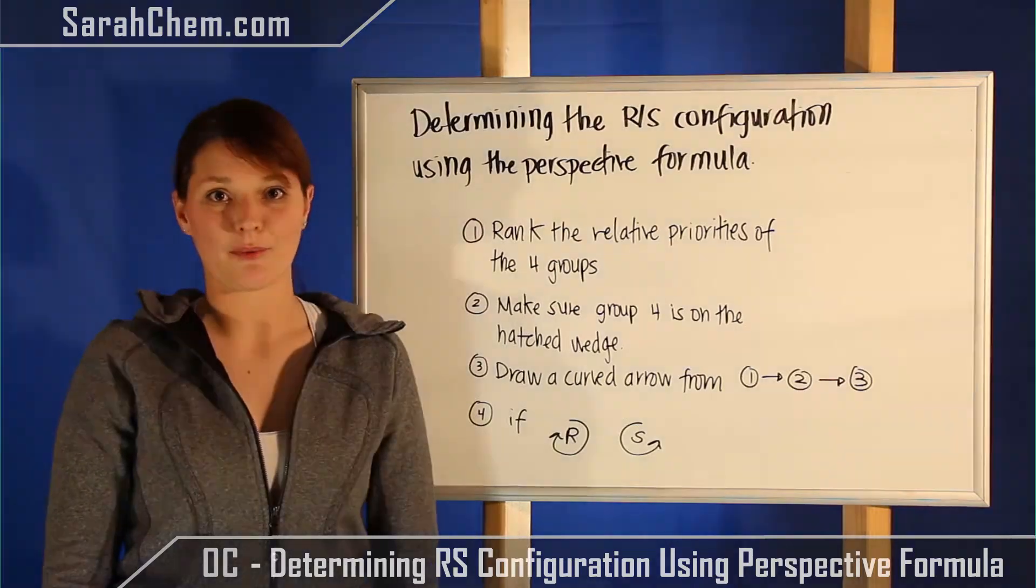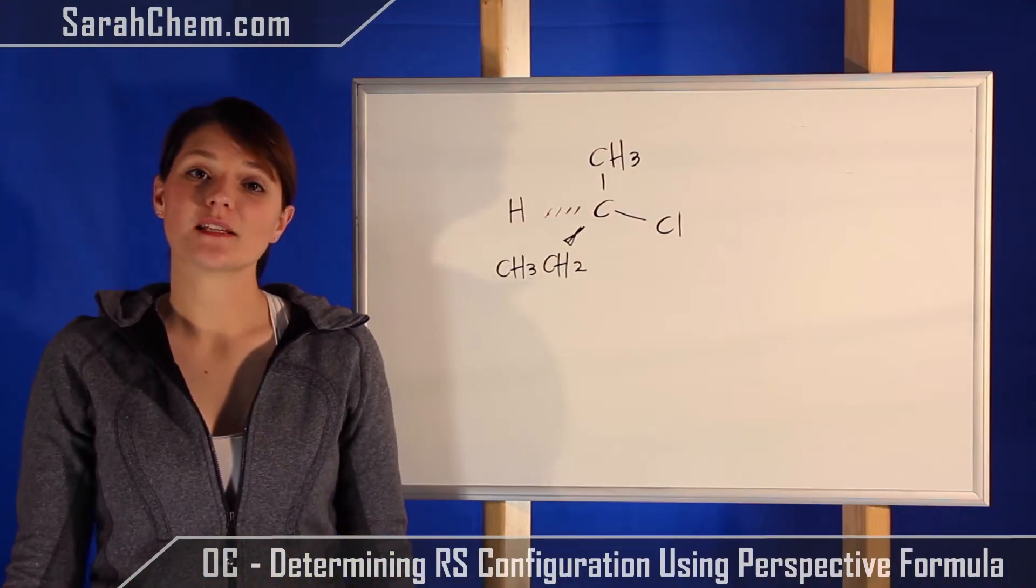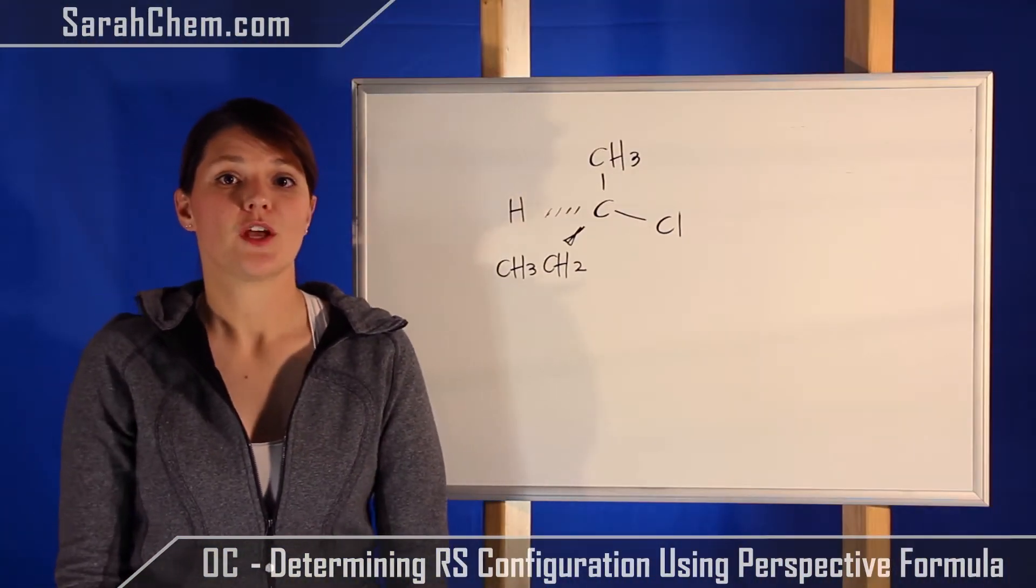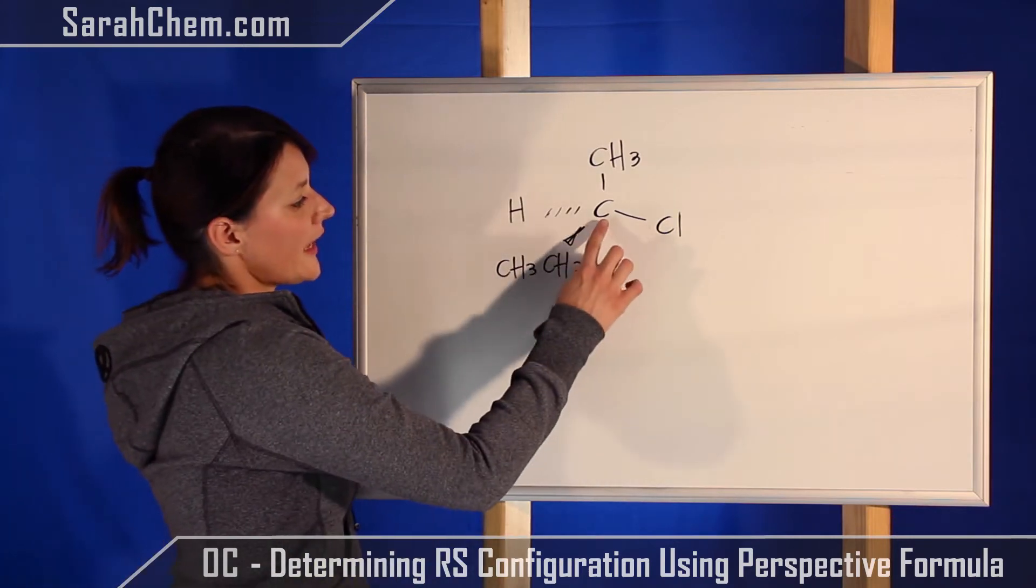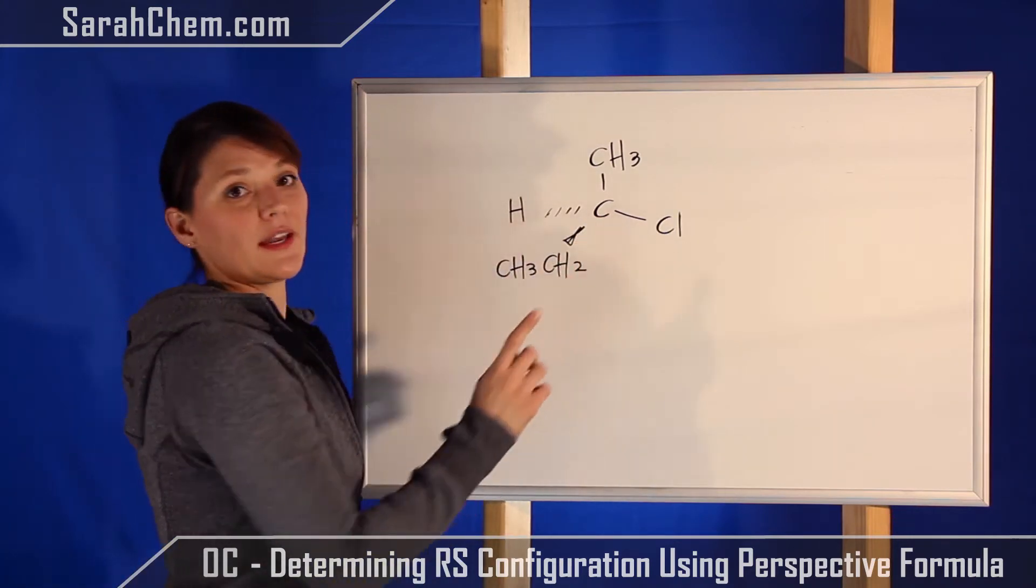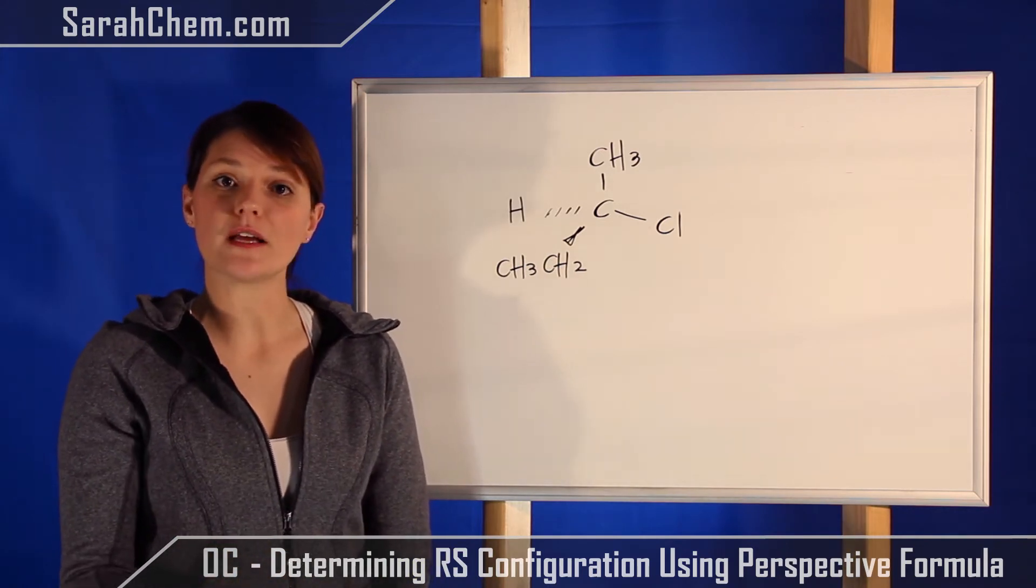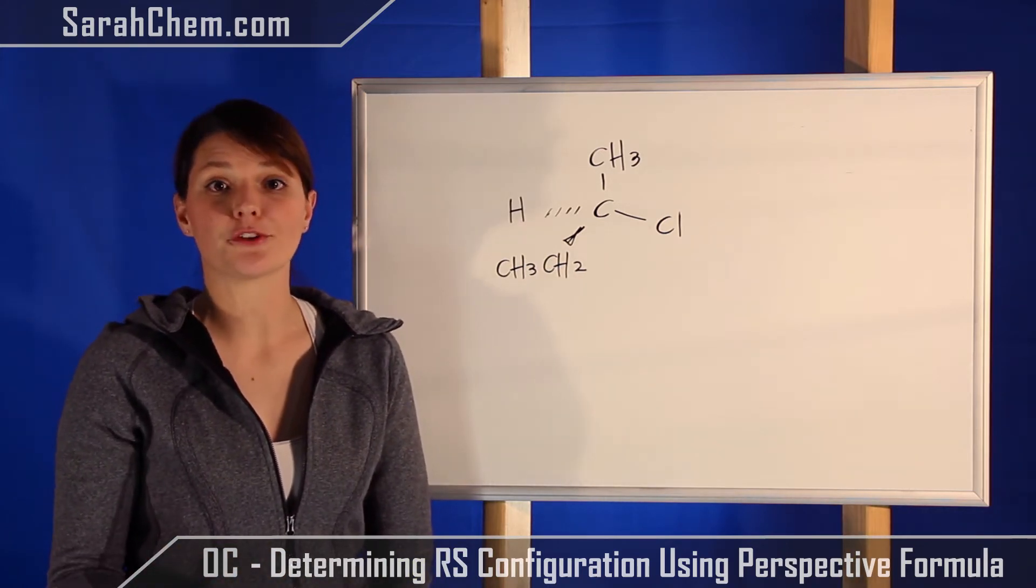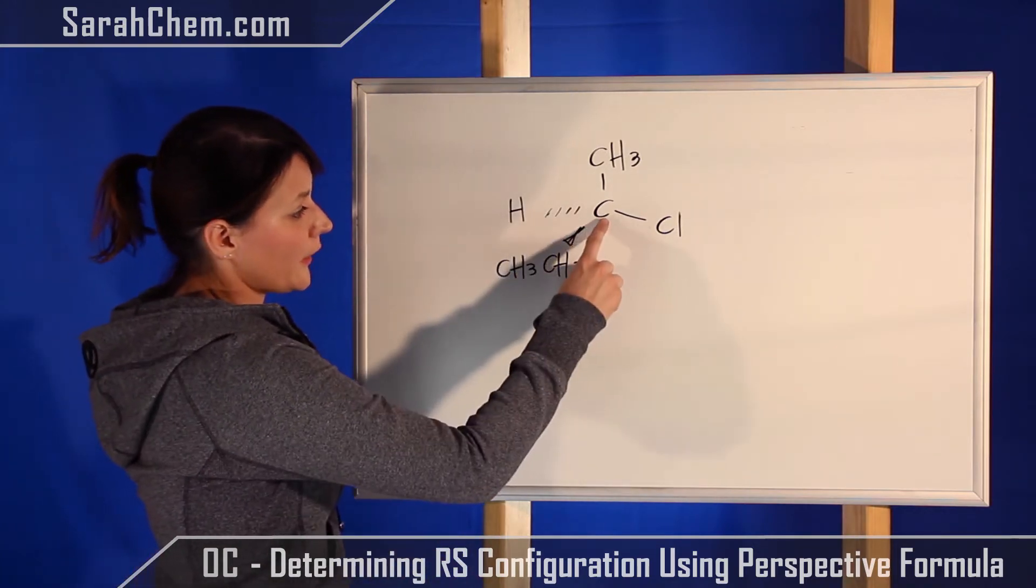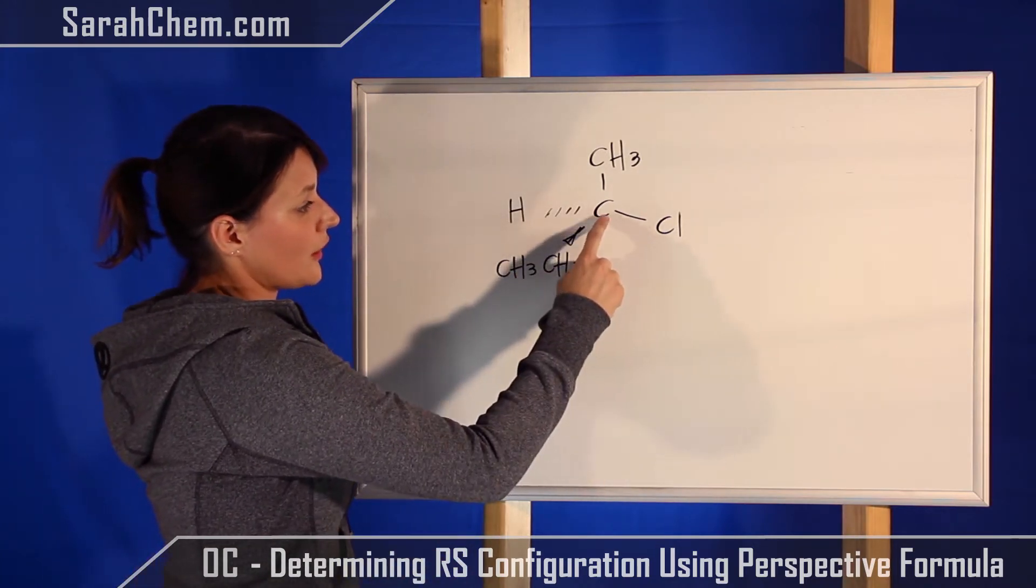So let's apply these rules to an example. Now let's apply those rules that we just learned. We're going to take this asymmetric center. Remember an asymmetric center is where you're going to have a carbon that is sp3 hybridized and has four different groups attached to it. Now we've identified that we have that kind of asymmetric center here.